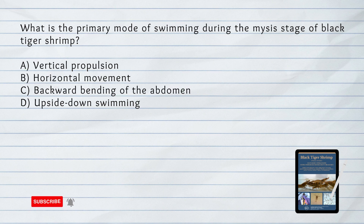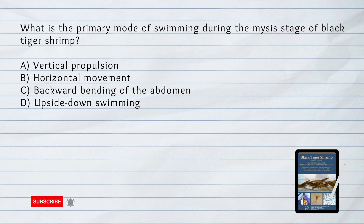What is the primary mode of swimming during the MISY stage of black tiger shrimp? A. Vertical propulsion. B. Horizontal movement. C. Backward bending of the abdomen. D. Upside down swimming.